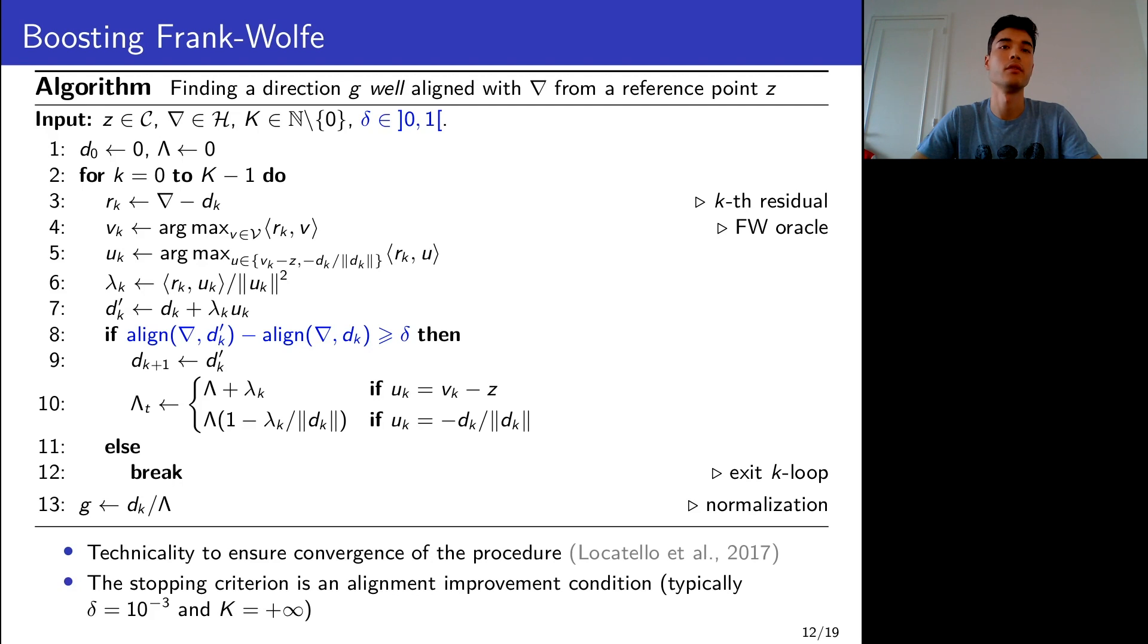What is perhaps more interesting is to notice that the stopping criterion of the procedure is an alignment condition on the directions we iteratively build. If we cannot improve the alignment by at least δ, then we stop the procedure and return the direction. This is because we only seek to improve the alignment, not to seek the perfect alignment, and want this procedure to remain efficient. So whenever we cannot sufficiently improve it, we stop the procedure and we move in that direction. This will provide already huge progress, as we will see in the experiments. Also notice that capital K here is just to cap the maximum number of rounds in the procedure, in case we are in a situation where the linear minimization is particularly expensive. But the default values here already work very well in practice.